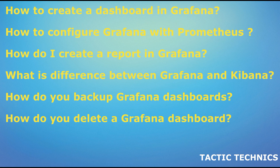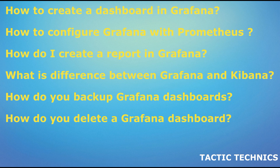How to configure Grafana? To configure Grafana, follow these steps: Install Grafana on your server or local machine. Start the Grafana server by running the command grafana-server or through your system service manager. Access the Grafana web interface by going to http://localhost:3000 or http://your-server-ip:3000 in your web browser. Log in with the default username and password, admin/admin. Change the default admin password for security reasons. Add a data source for Grafana to connect to and retrieve data from, for example InfluxDB, Prometheus, or Elasticsearch. Create a dashboard by adding panels and visualizations to display the data from your data source. Optionally, customize the look and feel of your dashboard by using themes and adjusting the settings.